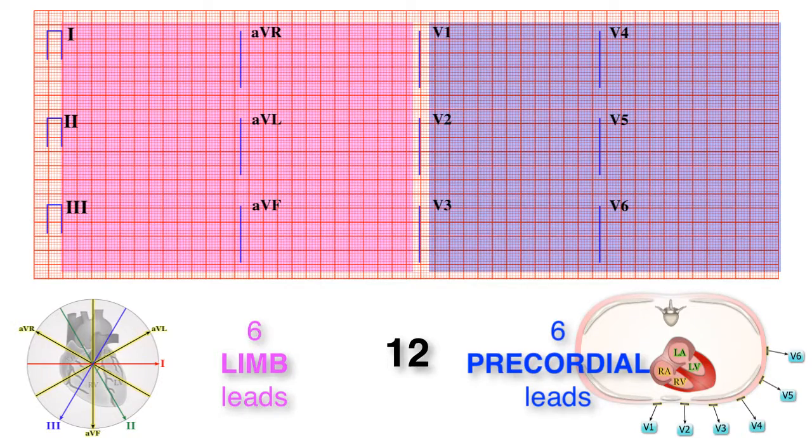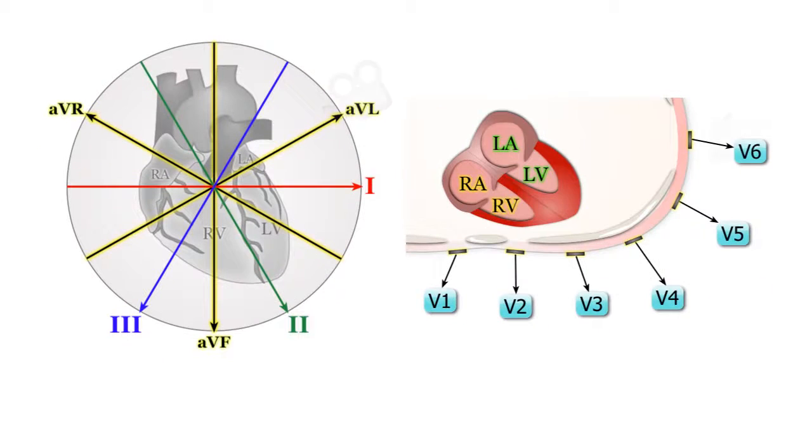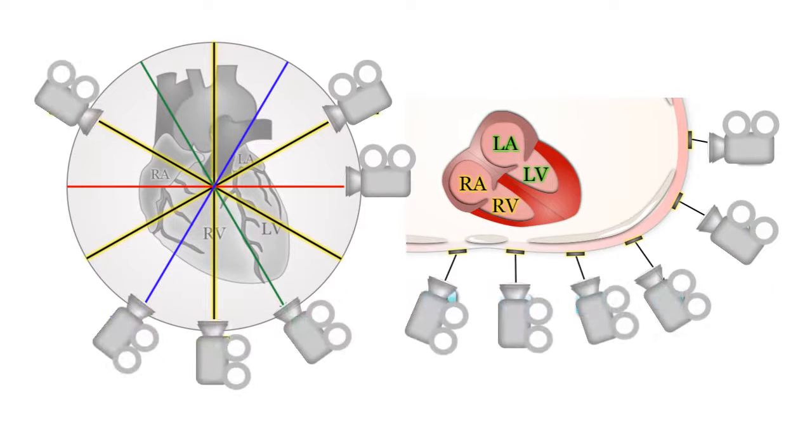Each lead provides a different view of the electrical activity. Think about having 12 cameras situated around the heart, which are each zoomed in and focusing on a specific area. By putting all those images together, you can get a pretty good idea of what's going on as a whole.